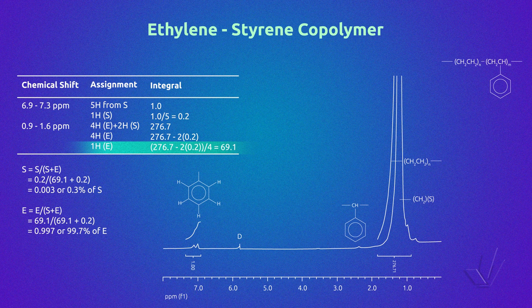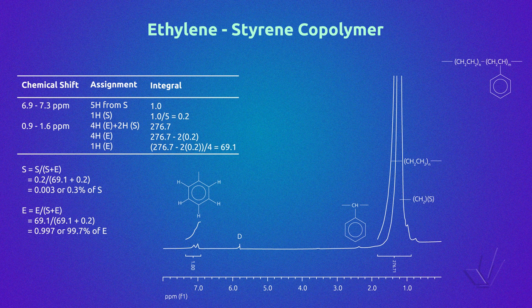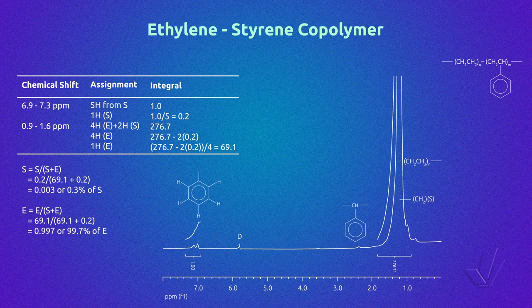The integral of 1 proton of the ethylene unit is obtained by dividing the aliphatic signal value by 4, as there are 4 protons of the ethylene unit in this signal. We then obtain the molar fraction and percentage of each unit using the integral of 1 proton of each structure. In this spectrum, the value obtained is 0.3 mol% of styrene in the copolymer, the rest being ethylene.